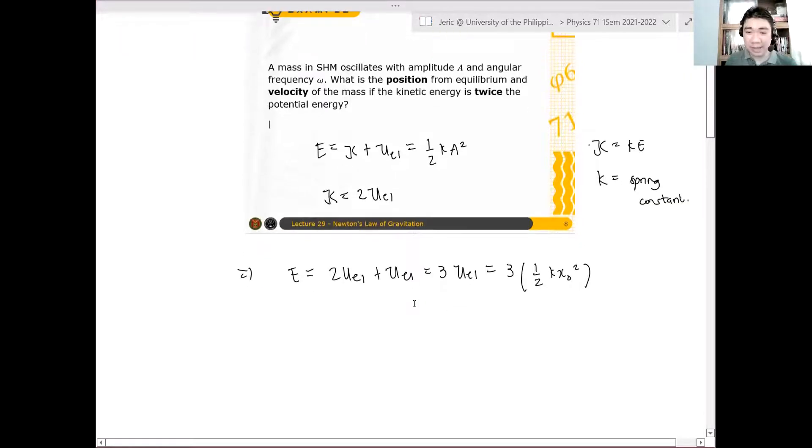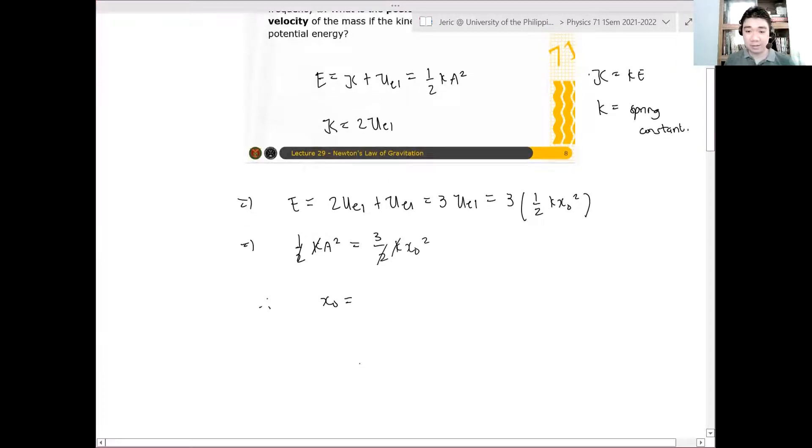Okay, so now, I know that this is also equal to one half k A squared is just equal to three halves k x naught squared. And therefore, k will cancel, and therefore, the one half will cancel, and therefore, the position relative to the amplitude is equal to what? I divide both sides by three. I take the square root, and therefore, x is plus or minus A over square root of three. This is the position where the elastic potential energy is twice the kinetic energy. Got it?